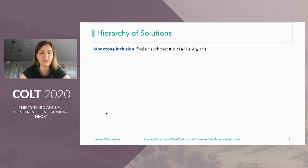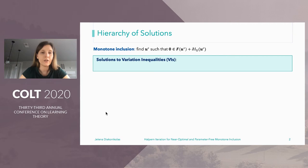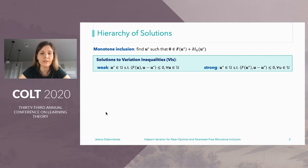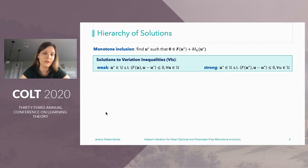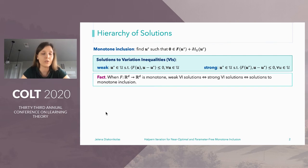In addition to monotone inclusion, another standard way of abstracting min-max optimization problems is through the lens of variational inequalities. There are two types of solutions: weak solutions and strong solutions. The only difference is in terms of the point at which we evaluate F — for weak solutions it is an arbitrary u from the set, for strong solutions it is u*, the optimal solution. A well-known fact is that when F is monotone, there is no difference between solutions to monotone inclusion or weak and strong solutions to variational inequalities — all of them are equivalent.